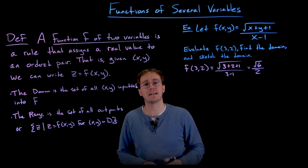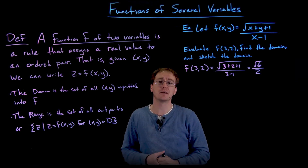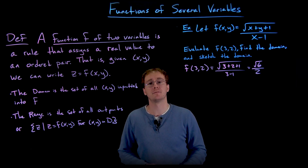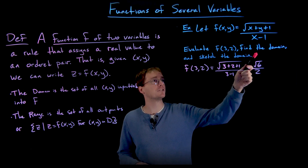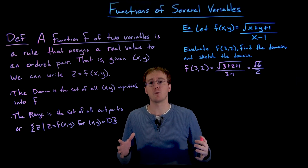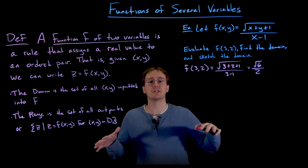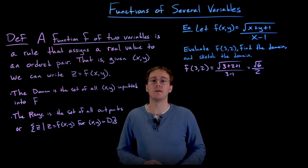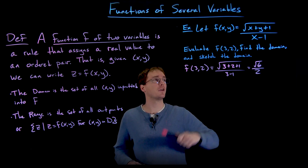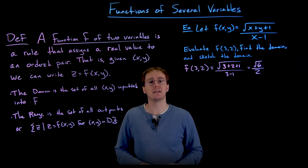We could also write this as an ordered triple x comma y comma z, and plot that point in three-dimensional space. If we repeated this process for every ordered pair in the domain and graphed all those points as ordered triples, we would create the three-dimensional surface that is the graph of this function. But in this example, we're just evaluating the function and finding and sketching the domain.